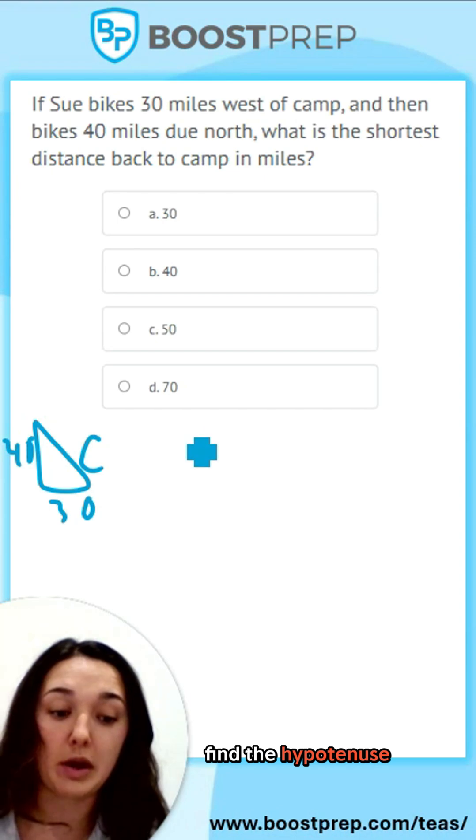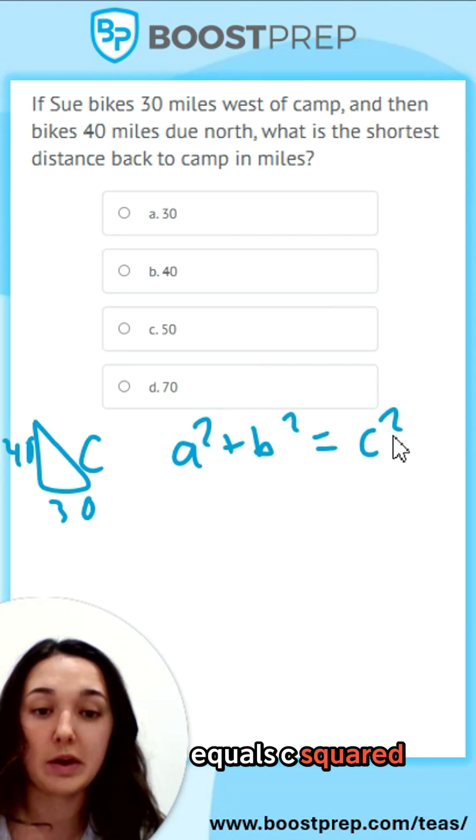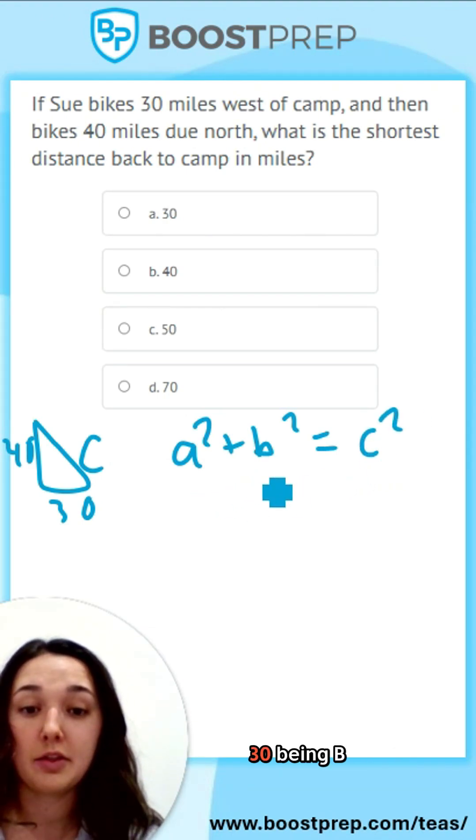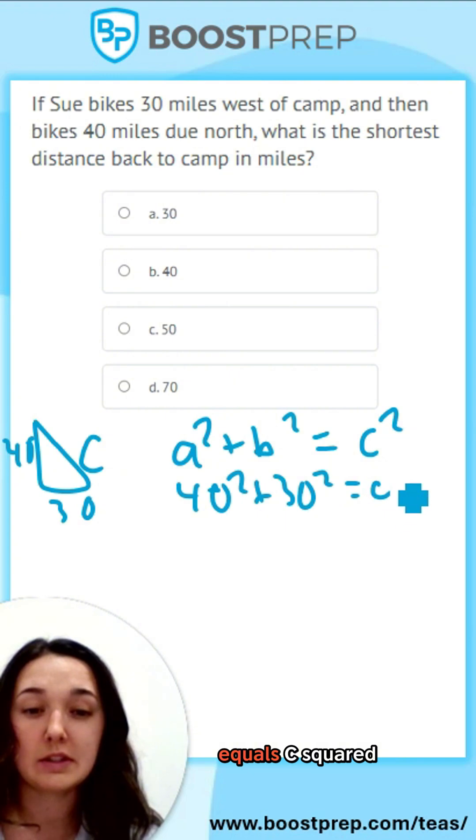So you're basically just trying to find the hypotenuse. And to find the hypotenuse, you need to do A squared plus B squared equals C squared, with 40 being A, 30 being B.